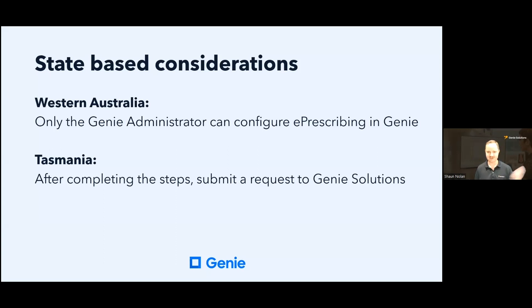If the patient requires Close the Gap (CTG) indicated on their prescription, it is located in the Secondary tab. There are two additional considerations depending on which state your practice is in. If you're in Western Australia, only the Genie administrator can configure users for e-prescribing — meaning if your Genie administrator is unable to access Genie, you will not be able to configure e-prescribing. If you are in Tasmania, after you complete the registrations you will need to submit a request to us to enable e-prescribing, as it is disabled by default in Tasmania but enabled for all other states.